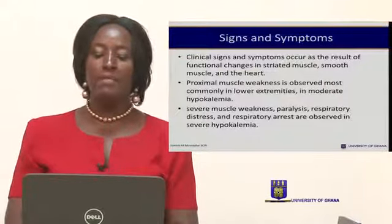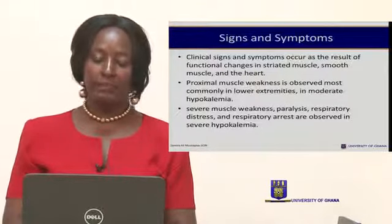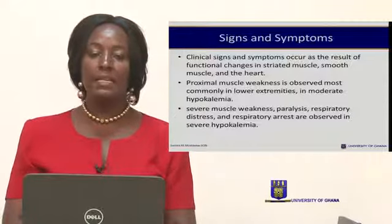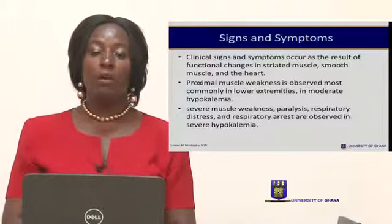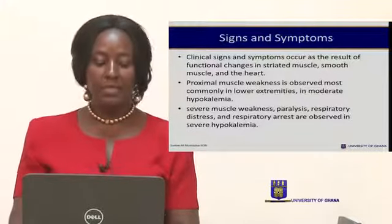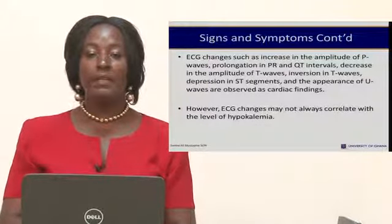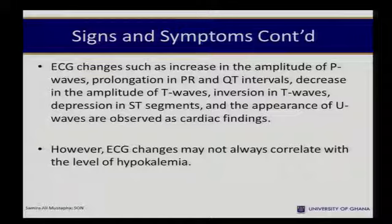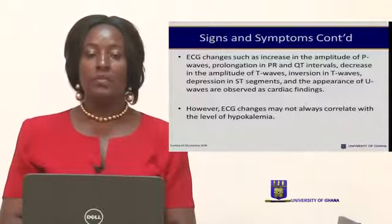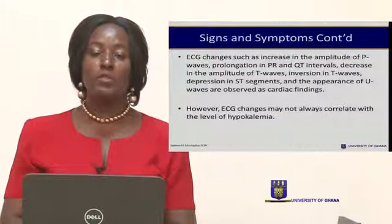In hypokalemia, proximal muscle weakness is observed, especially in the lower extremities. There can be severe weakness and paralysis even of the respiratory muscles, causing respiratory distress and potentially respiratory arrest, which may result in death in severe cases. ECG findings include increased amplitude of P waves, prolongation of the PR and QT intervals, depression of the ST segments, and appearance of U waves. ECG changes may not always correlate with the level of hypokalemia.